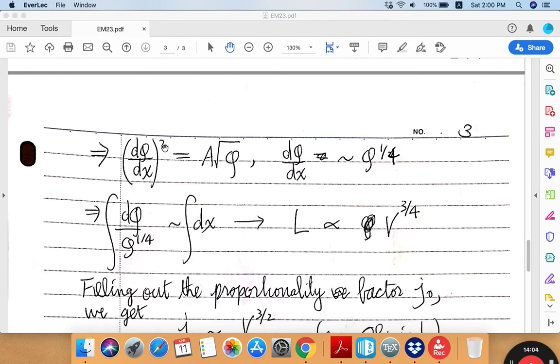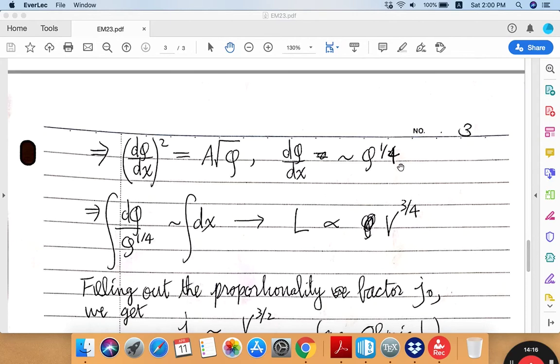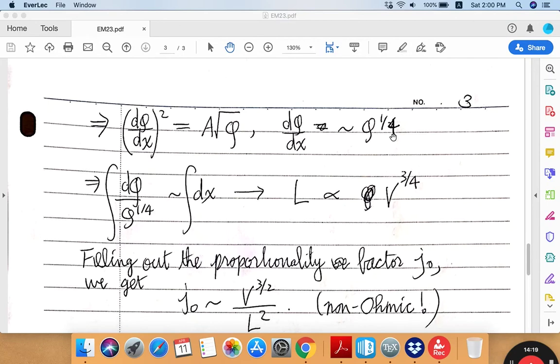So now you can take out this derivative from both sides and obtain the relation that the first derivative of the potential squared is proportional to the square root of the potential. Or taking away the square, you find that the first derivative of the potential is proportional to one-fourth power of the potential. So this thing can be integrated out one more time like this. And you will find that the result of the integration gives you something that reads that L, the length of the separation between the two charged plates, be proportional to three-quarter power of the potential difference.